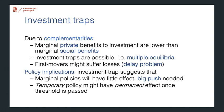An investment trap can take place because of complementarities, which means that whatever is optimal for an individual investor, a person or a firm, might not be optimal from a social point of view.